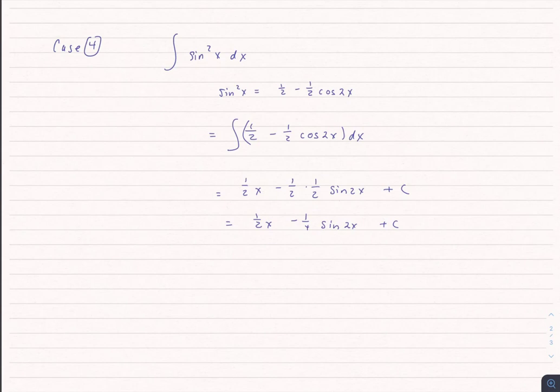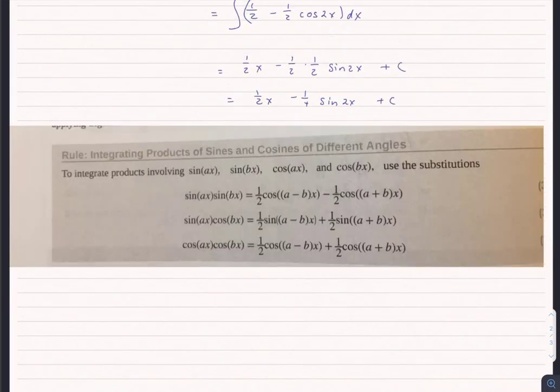Now, notice that in both of these cases, the x's are the same. But that doesn't always have to be the case. I'm taking this right out of the OpenStax book, the volume two for calculus. And this shows you that if we had different coefficients, different numerical coefficients, in front of the x in terms of sine and cosine, they don't actually have to be the same. We would be using different substitutions.